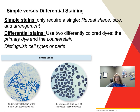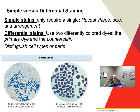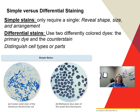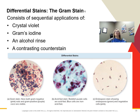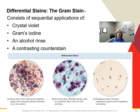Differential stains use two different colored dyes: a primary dye and a counter stain. We use these to distinguish different cell types — such as gram-positive or gram-negative — or different parts. These are more complex, have many steps, and require additional chemical reagents such as mordants to produce the desired effect. Gram-negative bacteria are often more virulent and can make you sick, though not always.